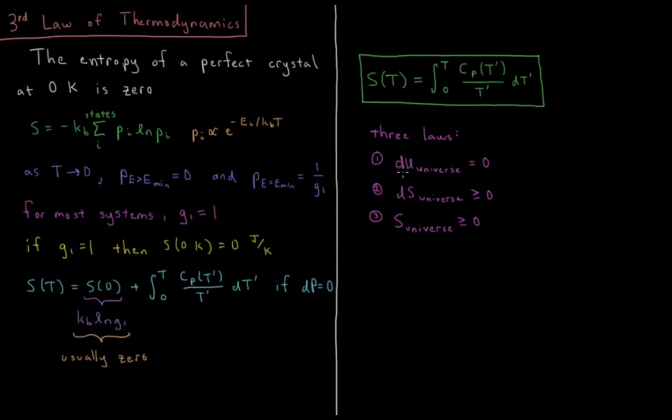For any isolated system or for the universe as a whole, the energy change is equal to 0 during any physical process. The entropy change during any physical process is greater than or equal to 0, and the absolute entropy of any physical system is greater than or equal to 0.